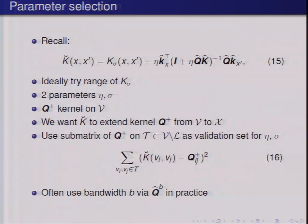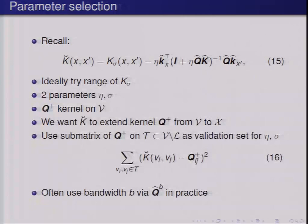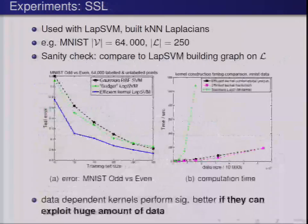Another neat thing is that this viewpoint gives a quick and easy way to do parameter selection. We're introducing additional parameters — sigma and eta, where sigma is a bandwidth parameter and eta controls the trade-off between intrinsic regularization and the norm in that space. But essentially we're extending the kernel from V to the whole space X, which gives an easy way to do cross-validation: pick a subset and use a criterion to cross-validate those two parameters before applying the kernel in an SVM or other method.